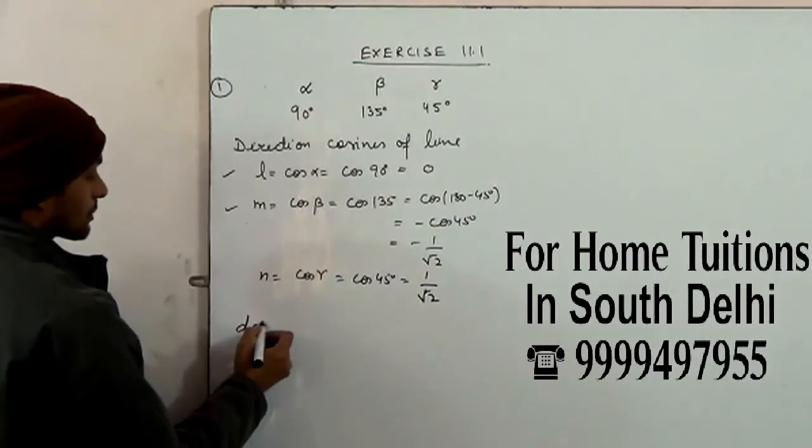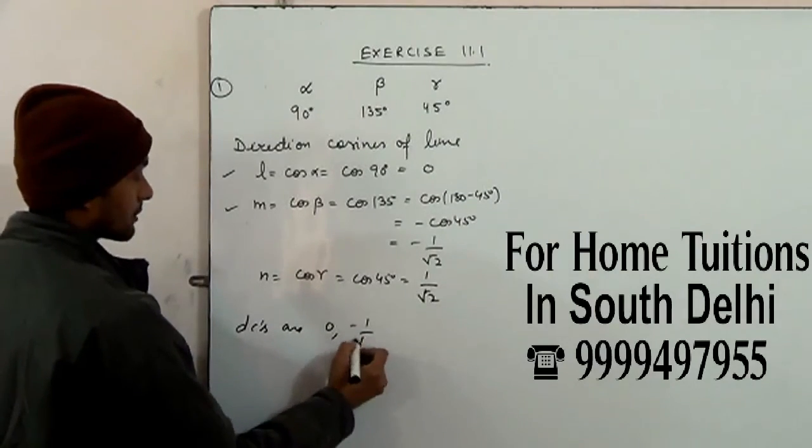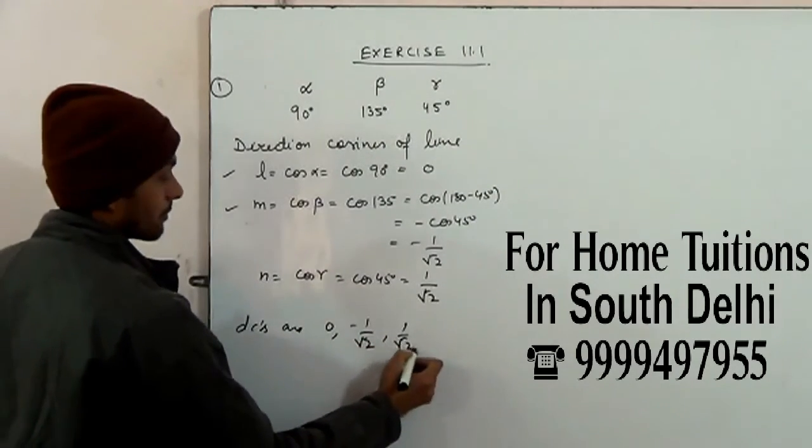Direction cosines are 0, minus 1 by root 2, and 1 by root 2. Okay, all right.